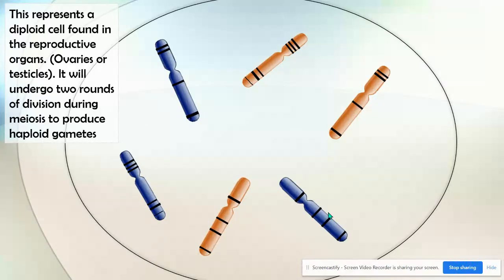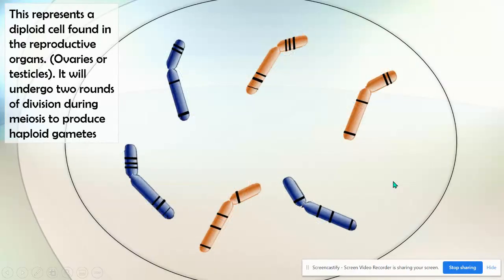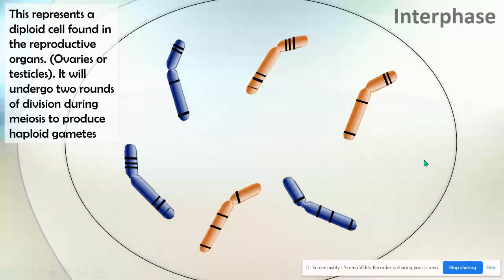So while humans have 46 chromosomes, it would be difficult to use that here to teach it, so I'm going to use six. I'm going to make them a little bit curved just to make it easier to show the sister chromatids. This is a diploid cell that we're going to start with in interphase.